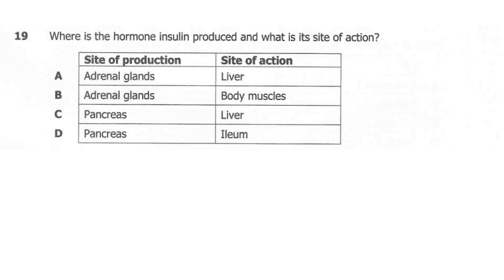Question 19. Where is the hormone insulin produced and what is its site of action? A: produced in adrenal glands, acts on liver. B: produced in adrenal glands, acts on body muscles. C: produced in pancreas, acts on liver. D: produced in pancreas, acts on ileum. The correct answer here is C. Insulin is actually produced in the pancreas and it will be used by the liver to convert excess glucose into glycogen.